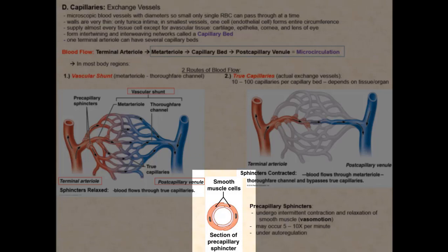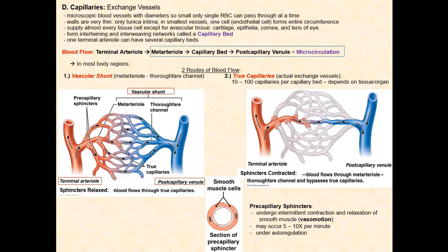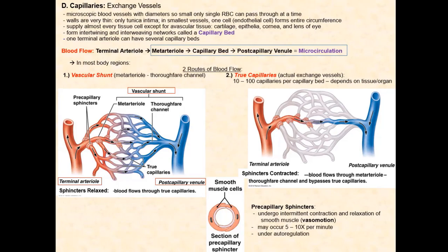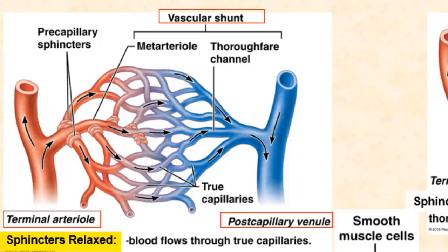There are no pre-capillary sphincters found anywhere along the vascular shunt. When the sphincters are relaxed, the lumens are dilated and the entrances into the true capillaries are open. This allows blood to flow not only through the vascular shunt, but through the true capillaries as well, so there is blood flow throughout the entire capillary bed.